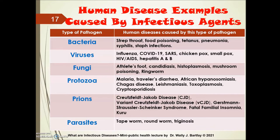In this table are examples of various types of pathogens and diseases they can cause. Bacteria can cause strep throat, food poisoning, tetanus, pneumonia, syphilis, and staph infections. Viruses cause seasonal influenza, COVID-19, SARS, chicken pox, smallpox, HIV/AIDS, and hepatitis A and B. Fungi cause athlete's foot, Candida, histoplasmosis, mushroom poisoning, and ringworm. Protozoa cause malaria and traveler's diarrhea. Prions cause Creutzfeldt-Jakob disease and Kuru. Parasites include roundworm and tapeworm.